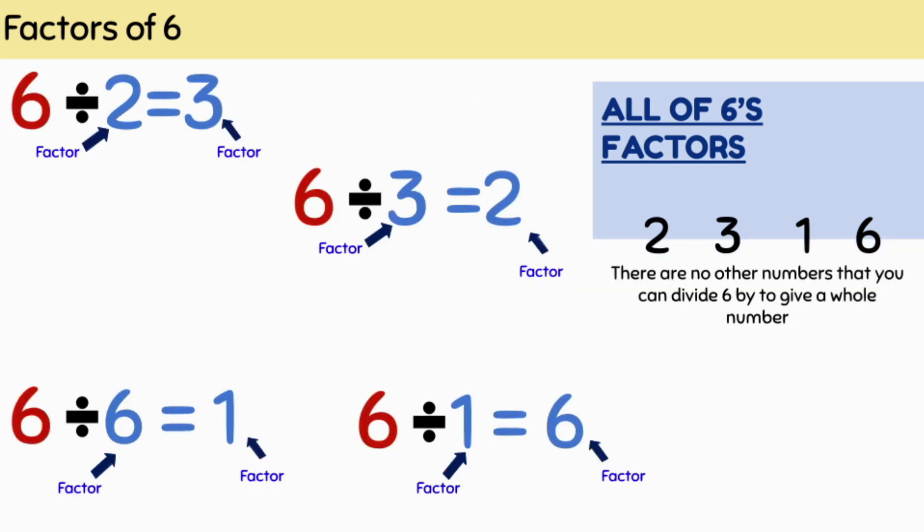You can also work out factors by dividing. We can divide six by two to give three or the reverse. Therefore, two and three are factors of six. We can also divide six by one to give six or the reverse. So one and six are also factors of six.